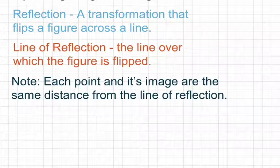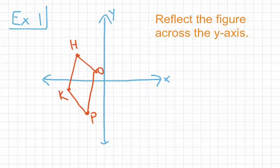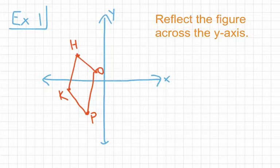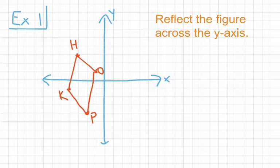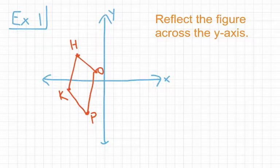You'll see what I mean by that as we go through some examples. For our first example, we have quadrilateral HOPK, and the directions tell us to reflect the figure across the y-axis. The first thing we have to do is determine what our line of reflection is — and they tell us it's the y-axis. The x-axis goes horizontally, the y-axis goes vertically, and we're going to count the distance that each point is from the y-axis.